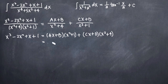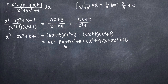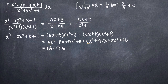Now that I've eliminated all of my fractions, I want to expand the right-hand side — in other words, multiply all these terms together. When I multiply the quantity Ax plus B times the quantity x squared plus 1, I'll get Ax cubed plus Ax plus Bx squared plus B. I want to collect like terms, so I'll pull together all my terms involving x cubed and factor out the x cubed, giving me the quantity A plus C times x cubed.